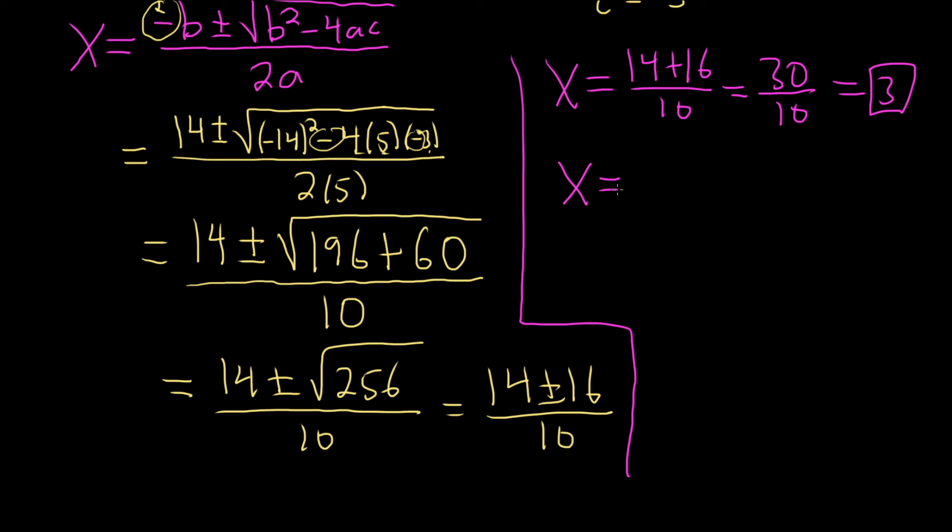And the other answer will be x equals 14 minus 16 over 10. So that's going to be minus 2 over 10, so minus 1 over 5.